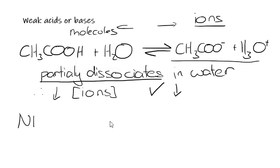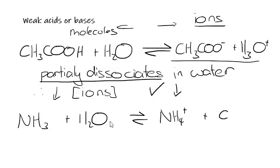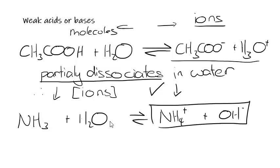The same applies to ammonia, which is a weak base. Ammonia reacts with water to form NH₄⁺ and OH⁻. So there are ions present, but again, because ammonia only partially dissociates — or you can say partially ionizes — there's going to be a low concentration of ions in the solution. So it has a low conductivity.